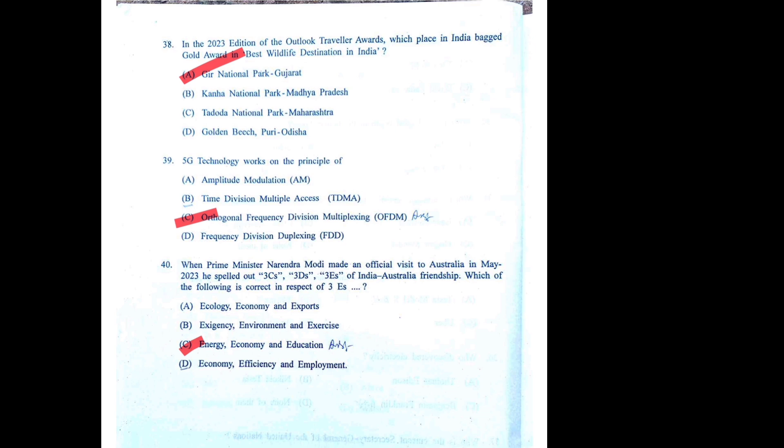If 45 marks is the total for GK and you score 20-25, combined with the English section, I think 50-55 marks can be considered a safe cutoff for now. After the final answer key is released, we will get a clearer picture. I think 55 marks should help you qualify for the next round of the process. If you liked the content, please share and subscribe. Thank you.